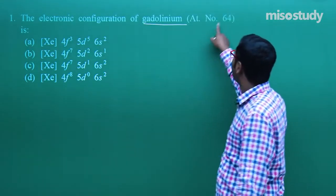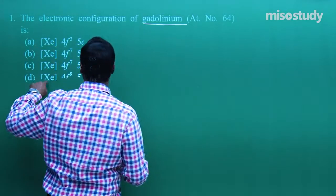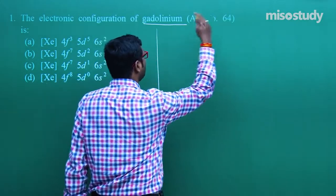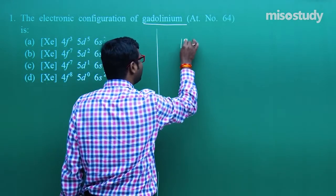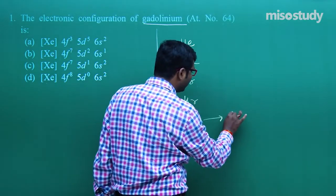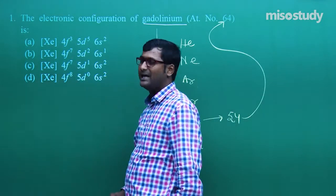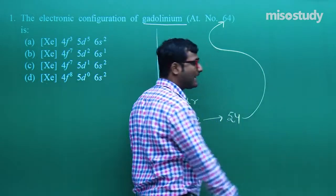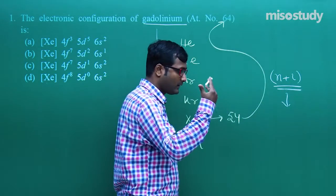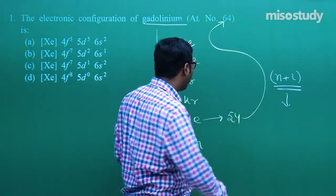Now let's start. Look at the electronic configuration of gadolinium — atomic number 64. What will be the electronic configuration in terms of the inert gas? We can write the electronic configuration in terms of the inert gas: helium, neon, argon, krypton, xenon, and radon. The atomic number of xenon is 54, which is very close to gadolinium, so the representation starts with [Xe]. To fill the remaining electrons, we follow the n+l rule — the sub-shell with the lowest value of n+l fills first.